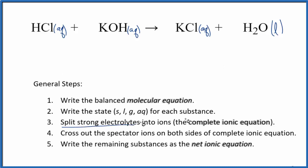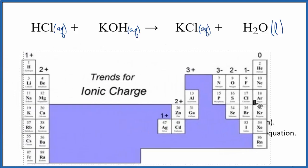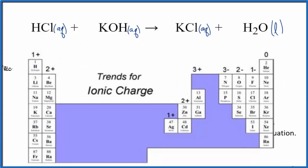Now we can split the strong electrolytes apart into their ions. This is going to give us the complete ionic equation. So we can go to the periodic table, and we can see that hydrogen here, that's in group 1, so it has a 1 plus ionic charge. Chlorine over here has a 1 minus, like everything in this group here.